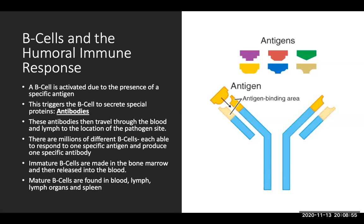B cells in the humoral immune response: B cells will secrete special proteins called antibodies, and antibodies will travel through the blood and lymph to the location of the pathogen site. There are millions of different B cells, each able to respond to one specific antigen and produce one specific antibody. Immature B cells are made in the bone marrow and then released into the blood, and mature B cells are found in the blood, lymph, lymph organs, and spleen.